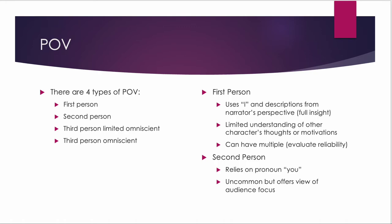If you look at point of view, there are four types: first, second, third person limited omniscient, and third person omniscient. In first person point of view, the narrator uses the word 'I' and the descriptions are from their perspective. You have full insight into the narrator's motivations, thoughts, and fears, but you get a limited understanding of other characters' thoughts or motivations — you really only see the one person's perspective.